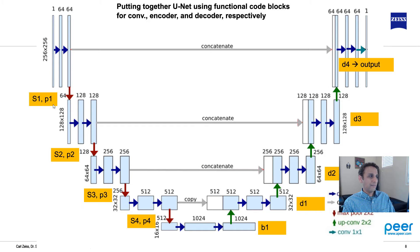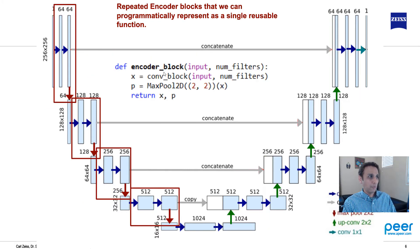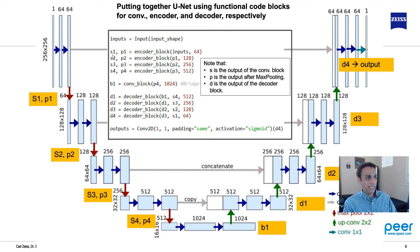Now let's put it all together to build the U-Net. Apply an encoder block on the input with 64 filters — that gives two outputs: s1 (skip connection, output of conv block) and p1 (max pooling output that goes to the next level). The next encoder block uses p1 with 128 filters, giving s2 and p2. This continues all the way down to the bottleneck b1, and then the decoder blocks begin.